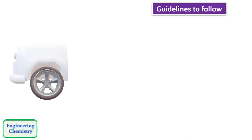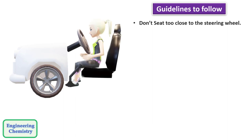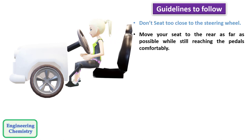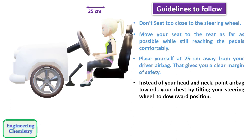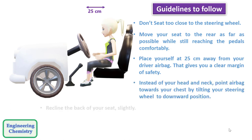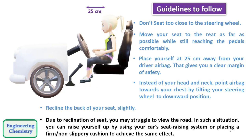By looking at all the advantages and disadvantages, there are some guidelines to follow. First, don't sit too close to the steering wheel — move your seat rearward as far as possible while still reaching the pedals comfortably, and place yourself at least 25 cm away from the driver airbag. Point the airbag towards your chest rather than your head and neck by tilting the steering wheel downward. Recline your seat back slightly; if this makes it difficult to see the road, raise yourself using the car's seat-raising system or a firm, non-slippery cushion.